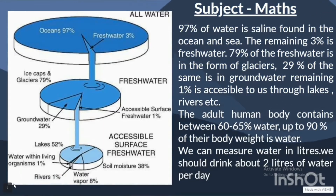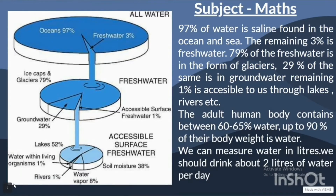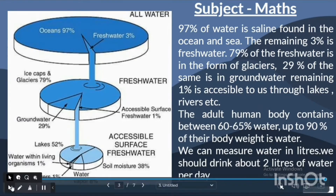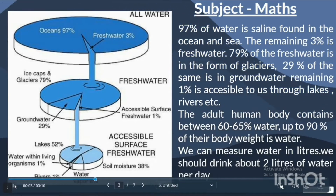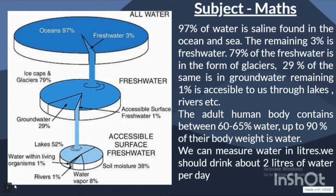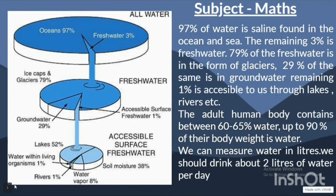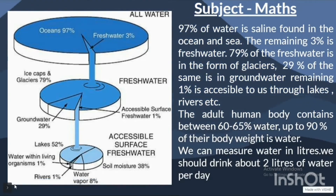Meaning only 1% is accessible, in lakes, rivers, etc. The adult human body contains between 60-65% up to 90% of their body weight as water. We can measure water in liters, and we should drink about 2 liters of water per day.